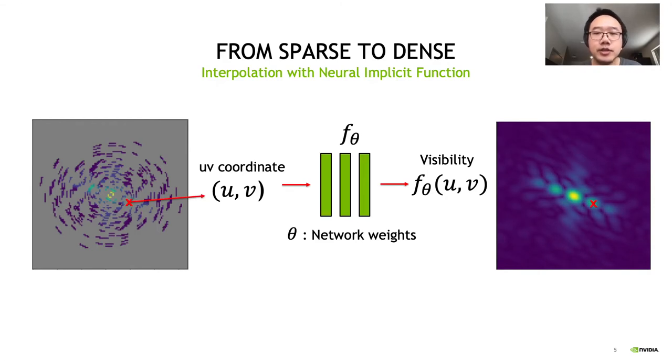In the training stage, given the UV coordinates of a sample visibility, the network predicts the corresponding values. Since we have the measurements for the input coordinates, we can compute the reconstruction error for the measured UV coordinates, and use this error as a loss function during optimizing for the network weights.